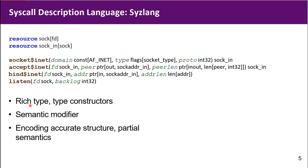It supports rich type constructors. It also supports semantic modifiers. Here are examples: const type, flag type, length type, and also resource type. I will talk about this later. With Syslang, we can encode accurate structure and semantics of these calls.